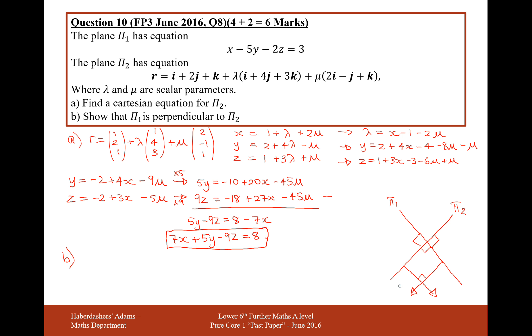So for π1, the vector of the perpendicular is 1, minus 5, minus 2. That's come straight from these coefficients here. And for the π2 n vector, we're going to get 7, 5, and minus 9.